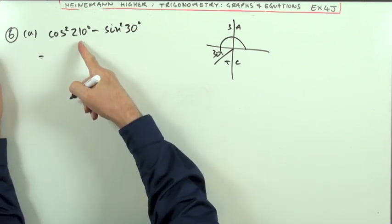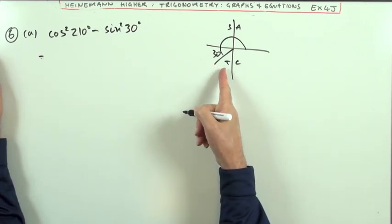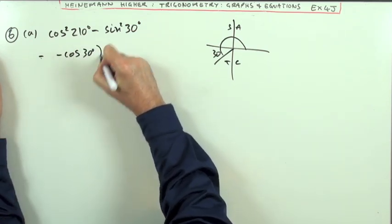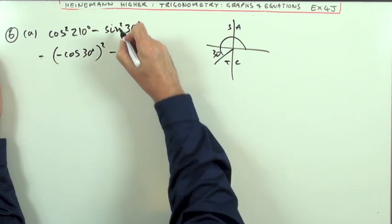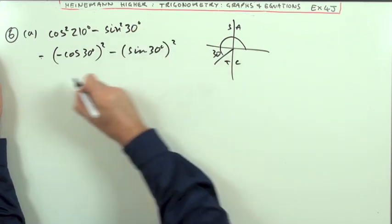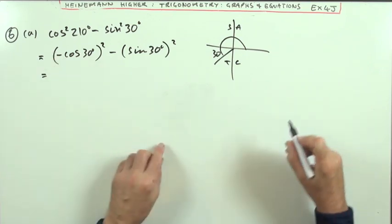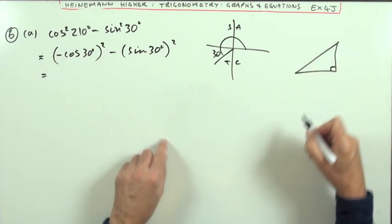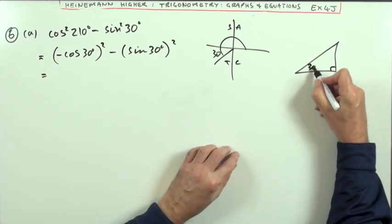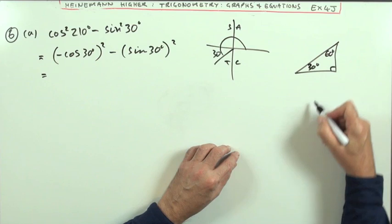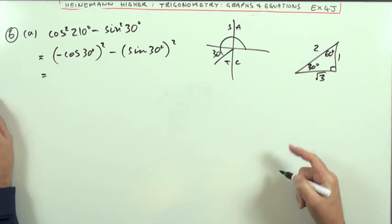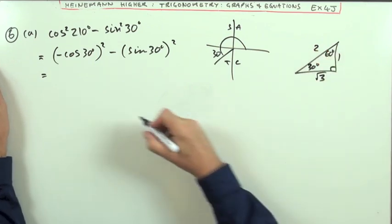So I think I'll emphasize that when I write this. So for this one, 210 took me into this third quadrant where only the tangent's positive, so the cosine's negative. So it's the same as negative cos 30 that's going to be squared. And that's just sine 30, because that already was acute. That's going to be squared.